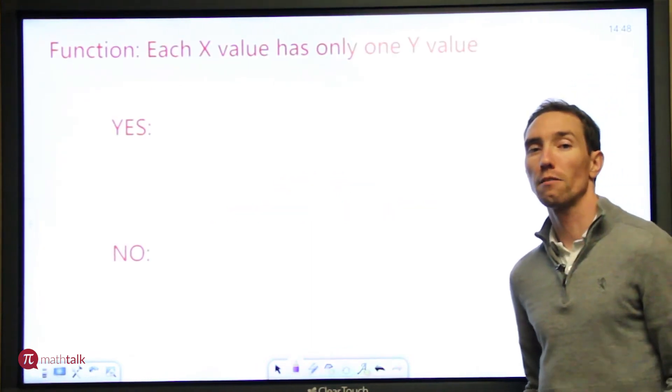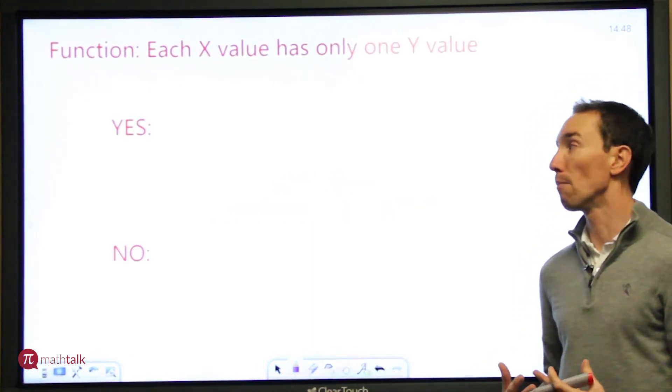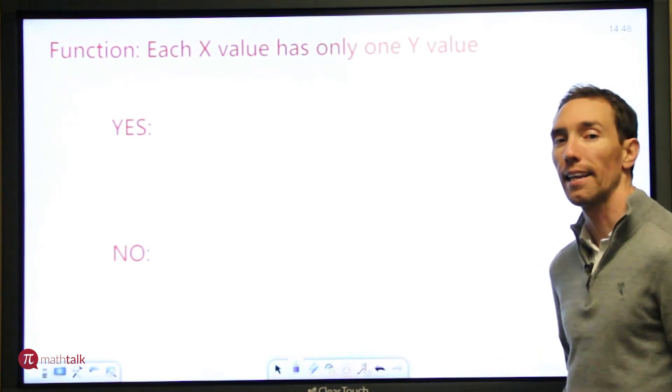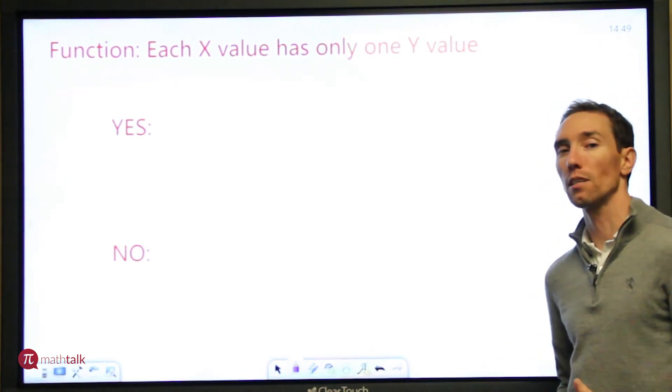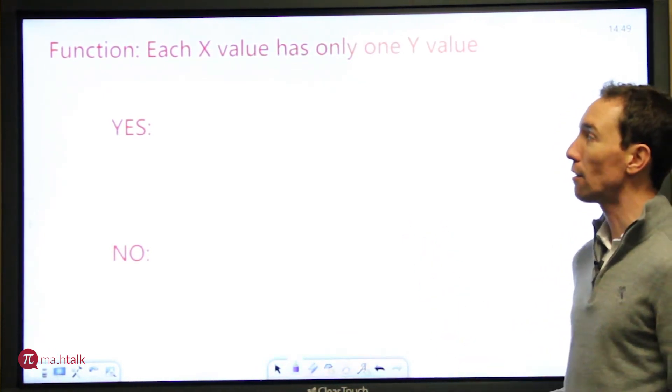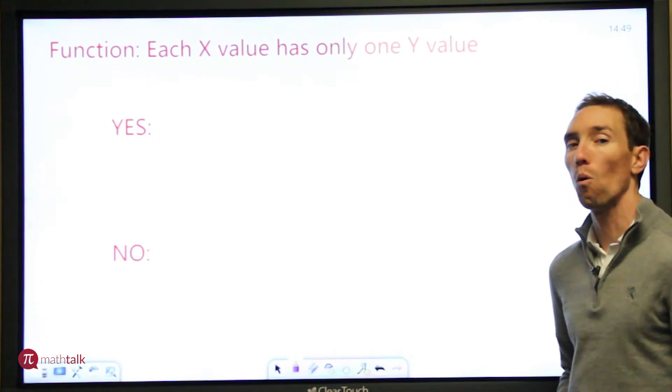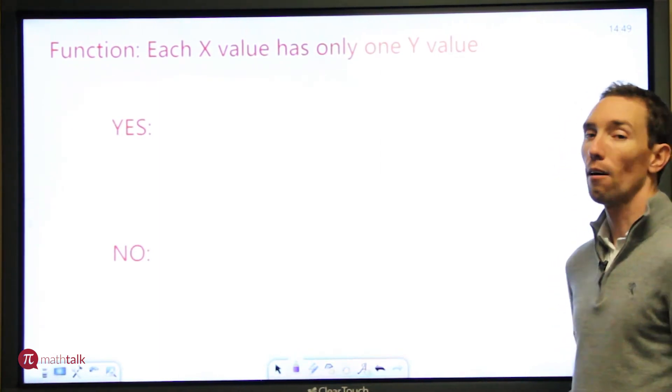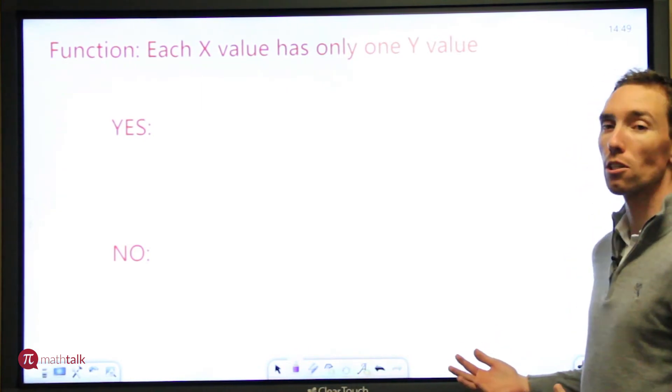There's a couple of ways that you can represent a function, and it depends on really the data that you're given. One of the ways you can see if something's a function or not is if each x value that you have has only one corresponding y value, then it's a function. Otherwise, it's not. So let me show you some examples.